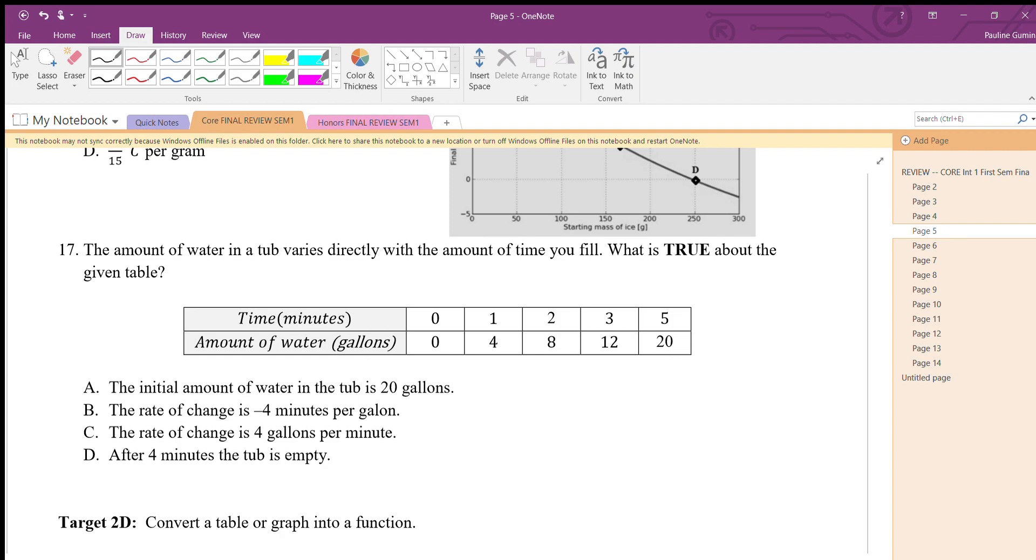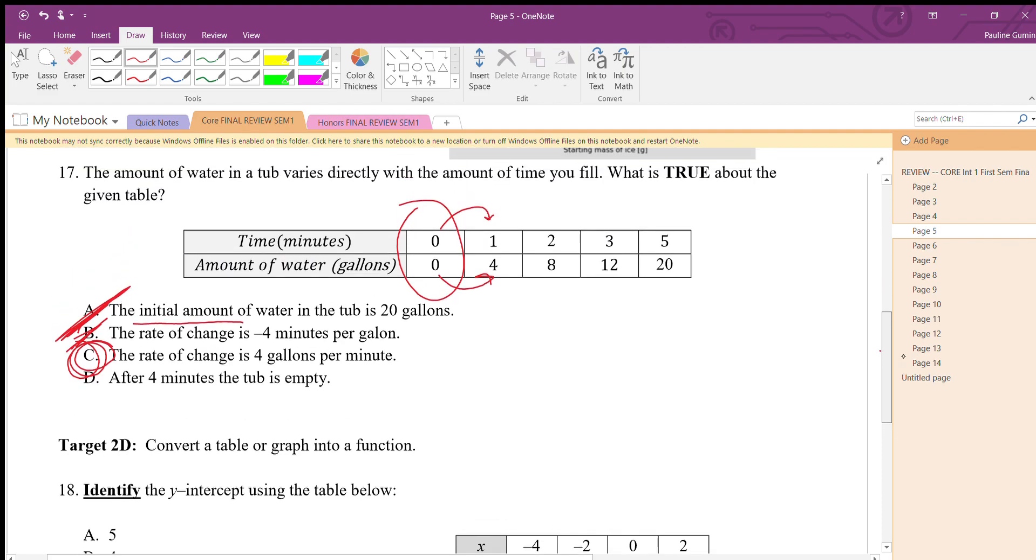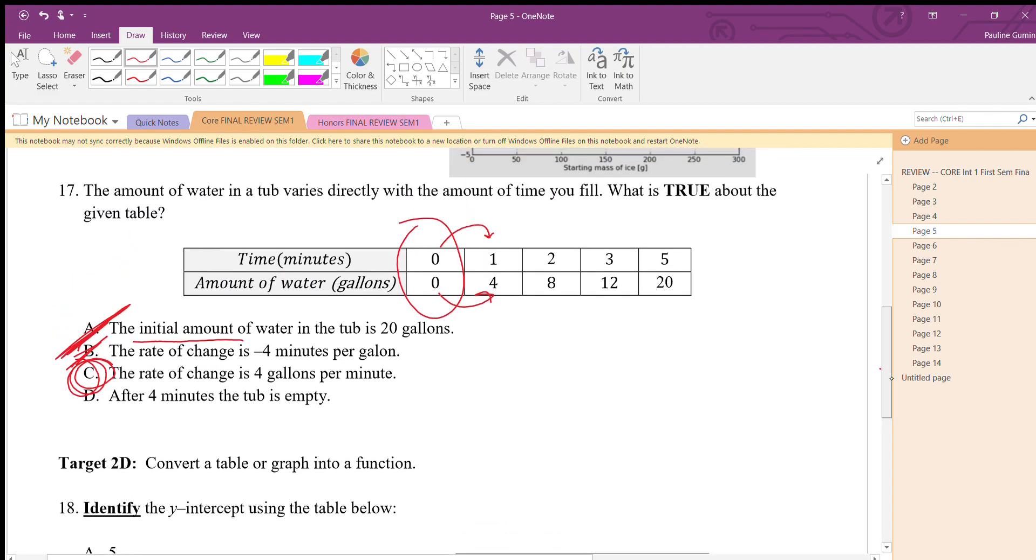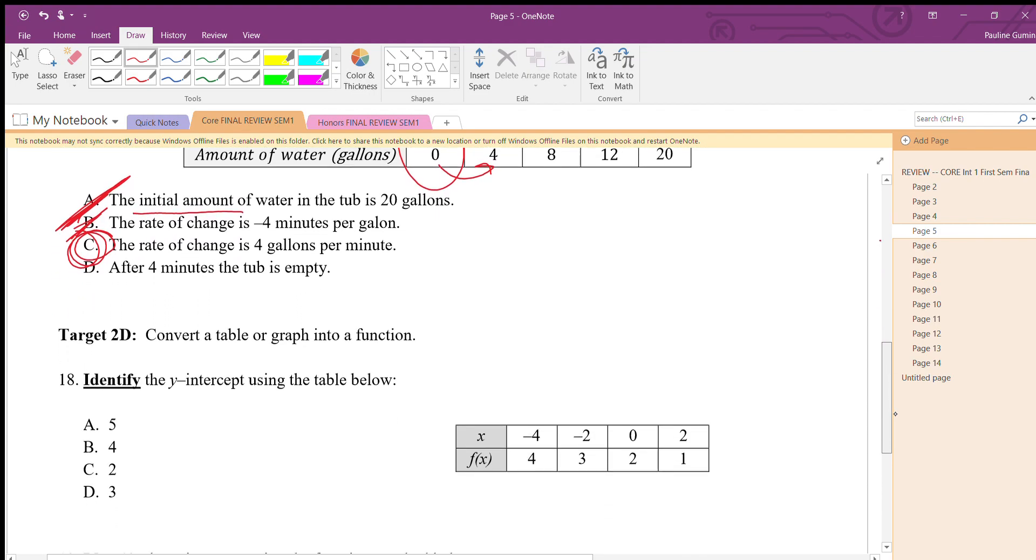The amount of water in a tub varies directly with the amount of time you fill. What is true about the table given? The initial amount of water in the tub is 20 gallons - now initial amount represents the y-intercept. In this case, here it is, it's not 20. The rate of change is negative 4 minutes per gallon - that means decreasing by 4 as time increases. Time is increasing, good, but the amount of water isn't decreasing by 4, it's actually increasing by 4. Letter C is our answer. Letter D is very silly by the way, because we're filling the tub up and it says four minutes the tub is empty.